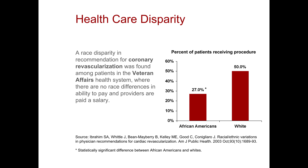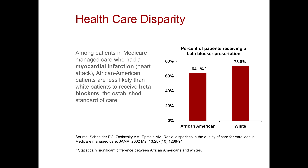A race disparity was also found for recommendation of coronary revascularization among patients in the VA healthcare system, where there are no race differences in the ability to pay and providers are paid by salary — so there's no incentive to treat them differently. And that's a pretty big gap. Among patients in Medicare managed care who had a heart attack, African American patients were significantly less likely than white patients to receive beta blockers, which are the established standard of care.